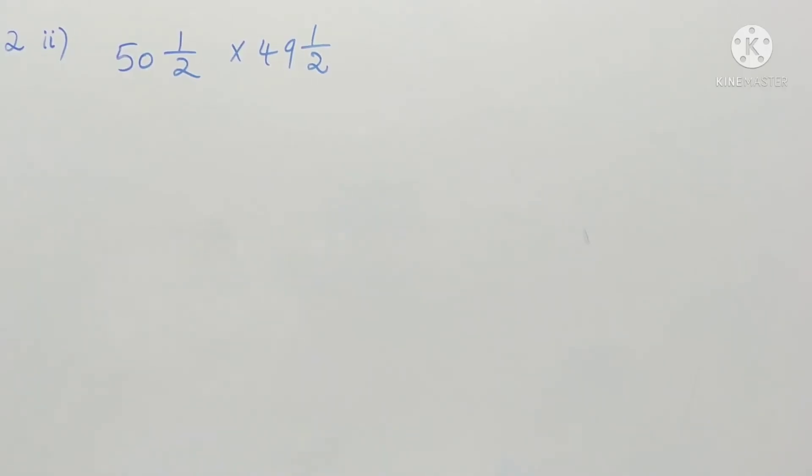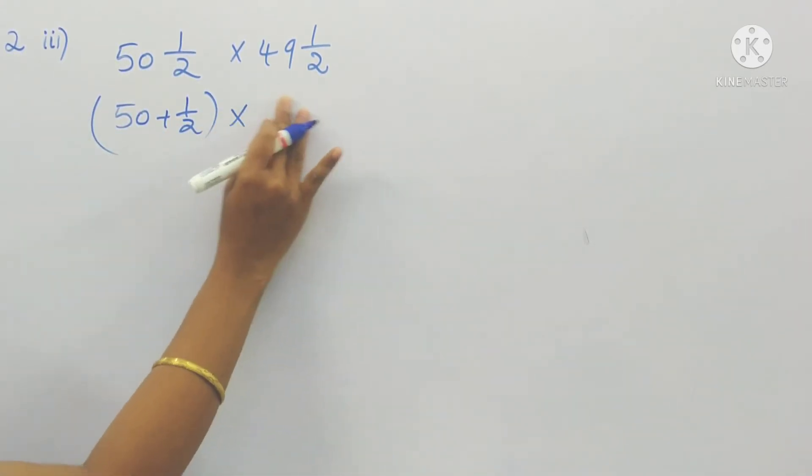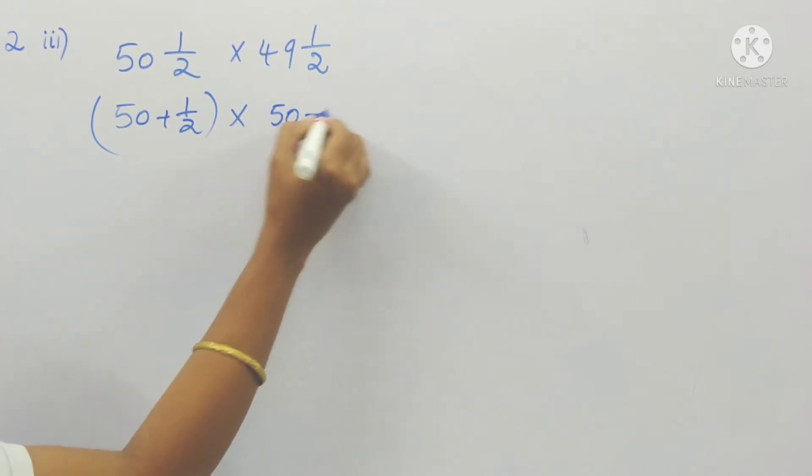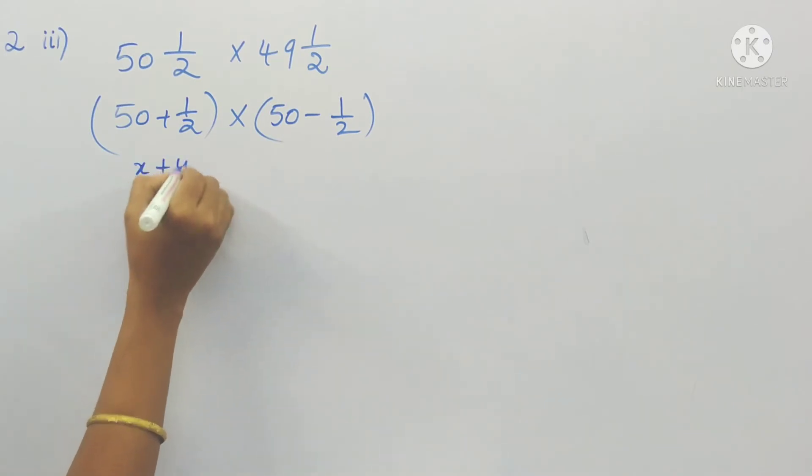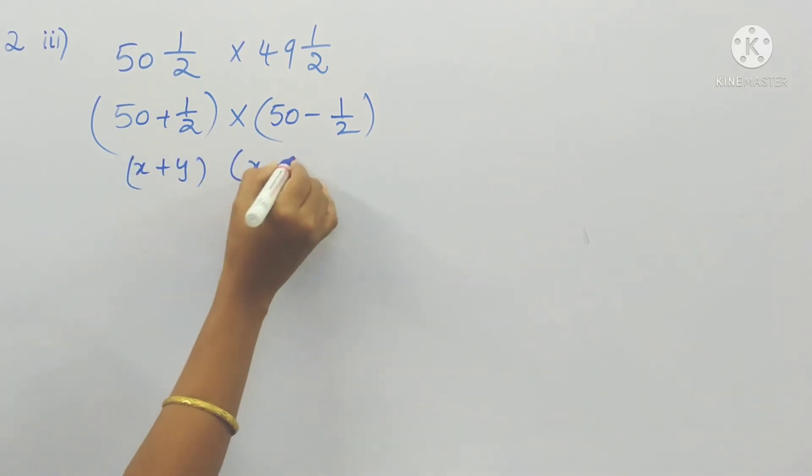Next one, 50 half into 49 half. This is our third one. So 50 half means I can write 50 plus 1 by 2 into 49 half means 50 minus 1 by 2. So now it is in the form of x plus y into x minus y.